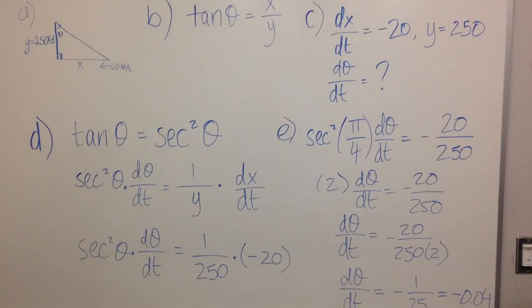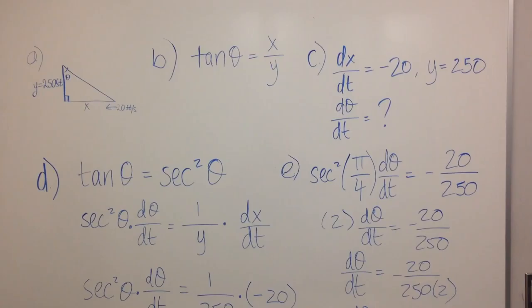Okay, so now we have to differentiate the original equation, which is tangent theta over x over y. We know that tangent theta equals secant squared theta, that's its derivative.